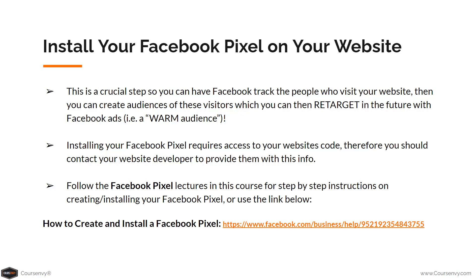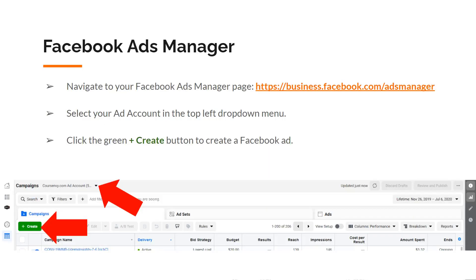You can then create custom audiences of these visitors, which you can retarget in the future with Facebook ads — a warm audience. Installing your Facebook pixel requires access to your website's code, so contact your website's developer to provide them with this info. Follow our Facebook pixel lectures in this course for step-by-step instructions on creating and installing your Facebook pixel. Finally, now that we have a Facebook business account set up, we can navigate to our Facebook ads manager page, select our ad account in the top left dropdown menu, and click the green create button to create a Facebook ad.